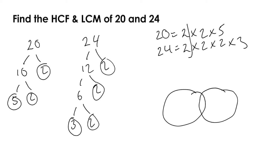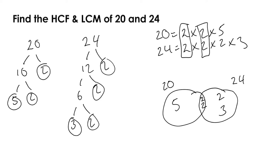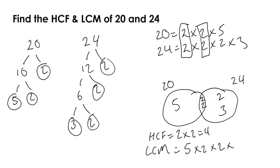We put these into a Venn diagram with the common prime factors in the middle — two twos. Five goes on the left for 20, and three goes on the right for 24. To find the highest common factor, multiply the numbers in the middle: 2 times 2 equals 4. The lowest common multiple is found by multiplying all numbers in the Venn diagram: 5 times 2 times 2 times 2 times 3, which equals 120.